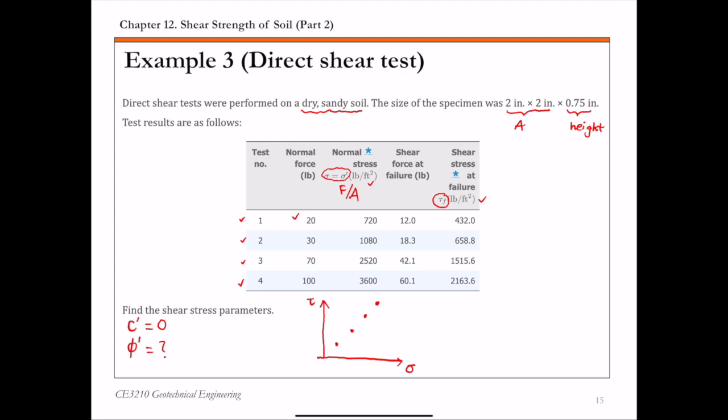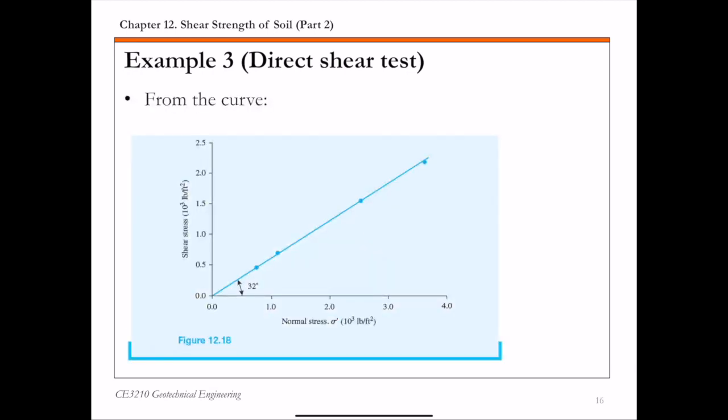And then we can fit a straight line through this data point. And this straight line is going to pass the origin because the C prime value for dry sand is 0. And this is basically what's shown on this graph here. Each data point here represents one result, represents result from one test. So you have, for each data point, that's a pair of normal stress sigma prime versus shear stress at failure tau F. And the straight line fit through this data point is basically your Mohr-Coulomb failure envelope.